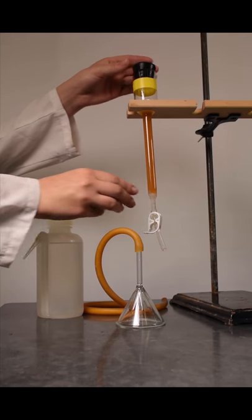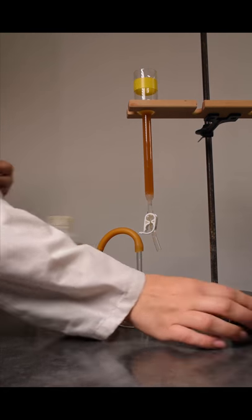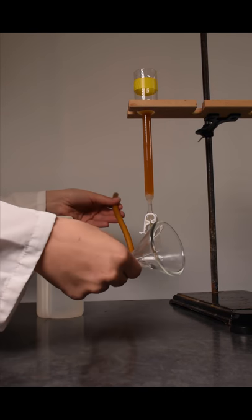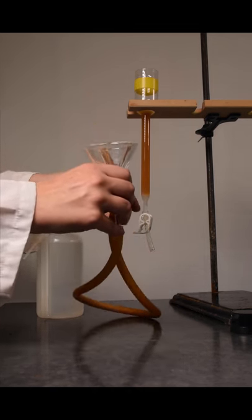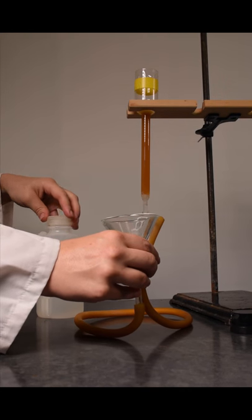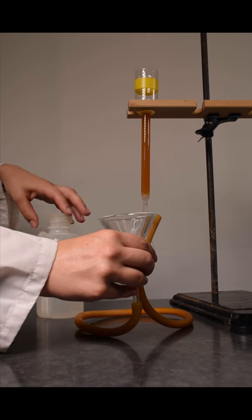Use the funnel support to hold the column. Prepare the ion exchange column by removing the stopper. If the solution level is near the top of the column, carefully pour a small amount off the top, or allow it to drain through to accommodate for the backwashing.